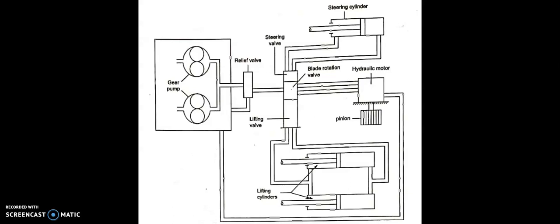The control valve bank consists of steering control valve, blade rotation valve, and blade lifting valve. Each of the valves is operated separately by the operator. The steering valve operates the steering cylinder. The blade rotation valve sends oil to the hydraulic motor cylinder, while the lift valve sends oil to the lift cylinder accordingly.